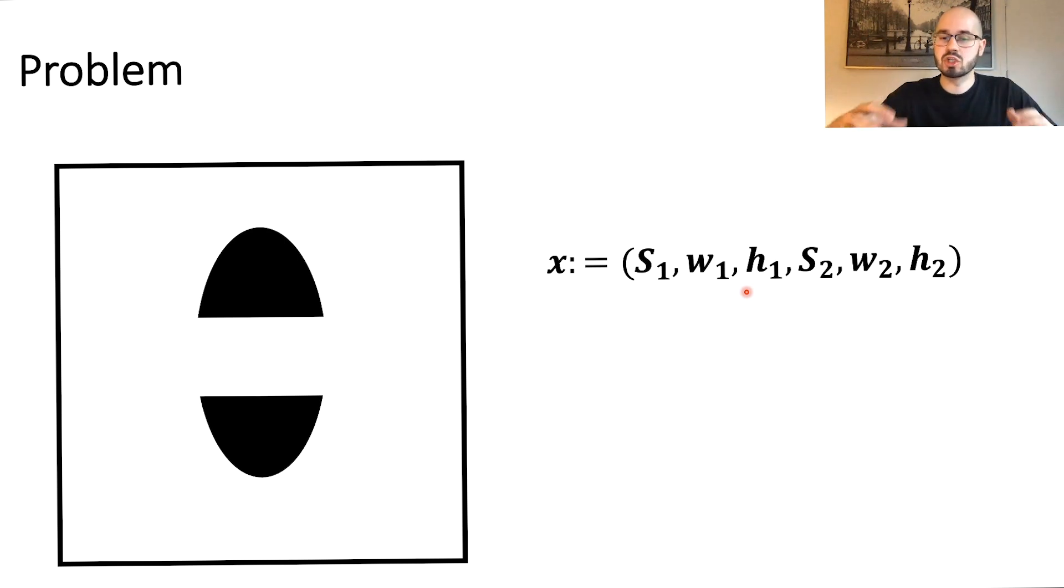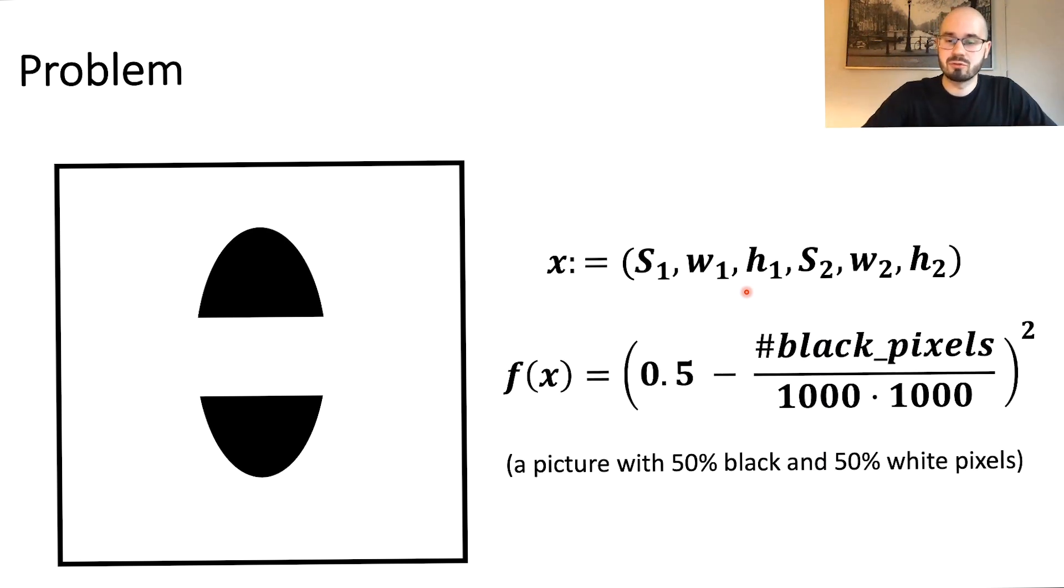Now the optimization goal is to create a canvas with exactly or as close as possible 50 percent black and 50 percent white pixels. A bit more mathematically you can define this as an error function which wants to be as close as possible to 50 percent with the relation black divided by the total number of pixels.